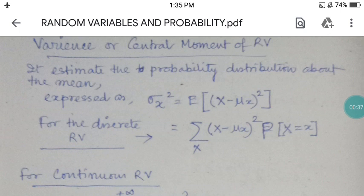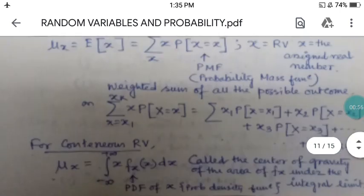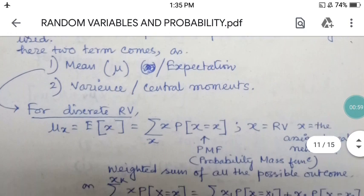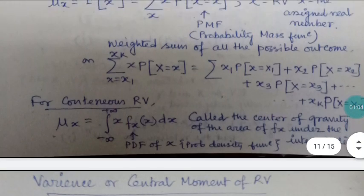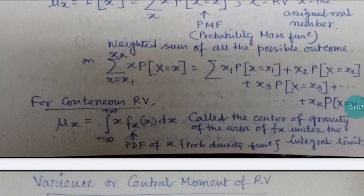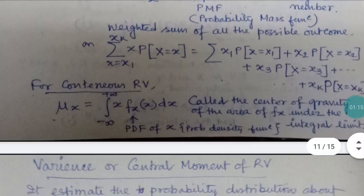Today's topic is the variance of the central moment. What is variance? The central moment and the expectation — that is called mu — is the statistical average. So how do we calculate mu and variance? The mean is called the expectation and variance is called the central moment. PMF, that is the probability mass function, is used for discrete random variables, and the probability density function is used for continuous random variables.